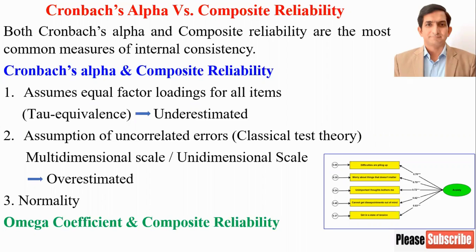In that case, Cronbach alpha is not an appropriate estimate for internal consistency because true reliability would be overestimated. If there is a unidimensional scale, then Cronbach alpha is fine.